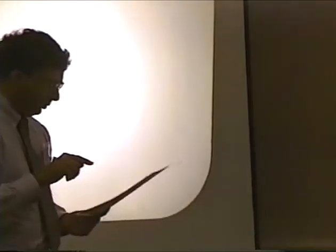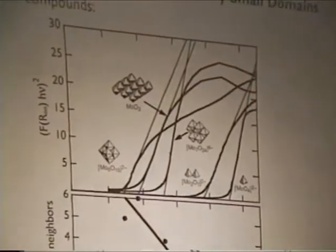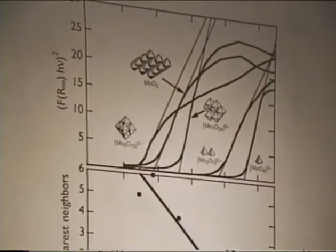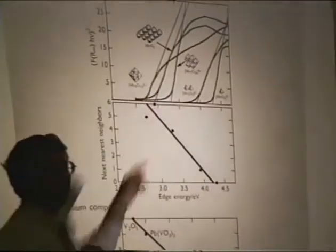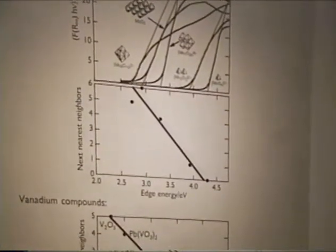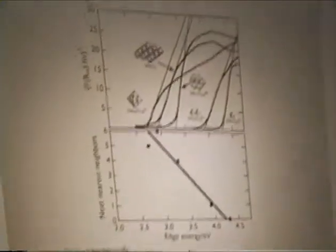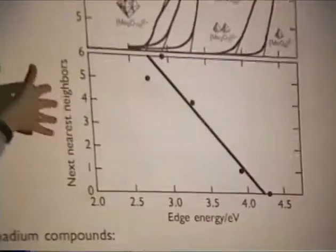Before we try to get this curve in some absolute sense, let me show you another correlation that can be obtained from measurements of edge energy. You can measure this edge energy for particles that are very large and particles which are very small, in fact, down to the cluster limit. About a year and a half ago, the following correlation was made: if you took a series of molybdenum oxide cluster compounds and looked at the size of the cluster defined as the number of next nearest neighbors, you can get a measure of the size of the box by counting the number of next nearest neighbors.